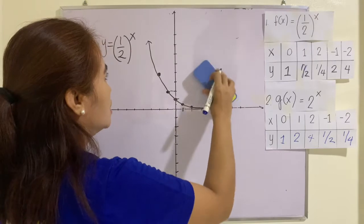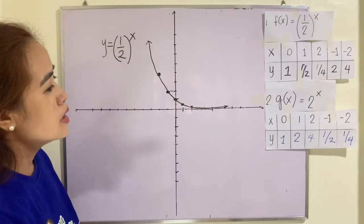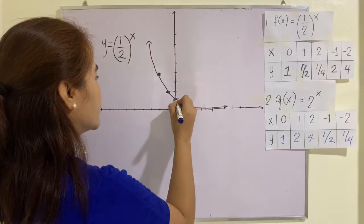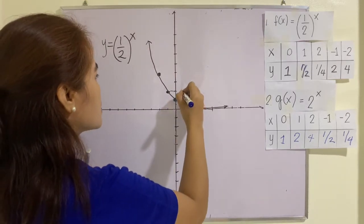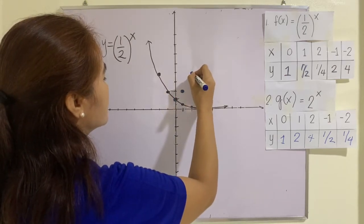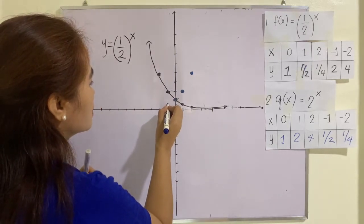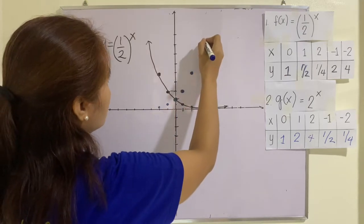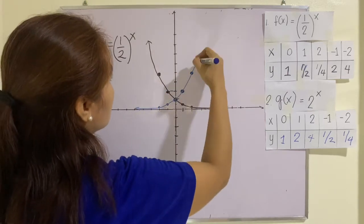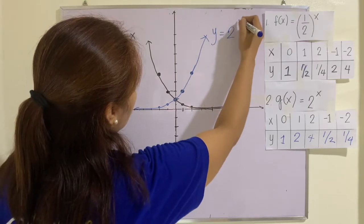You are now ready to plot these points on the rectangular coordinate system. We have (0, 1), (1, 2), (2, 4), then negative 1 and 1/2, and negative 2 and 1/4. So this is the graph of y equals 2 raised to x.